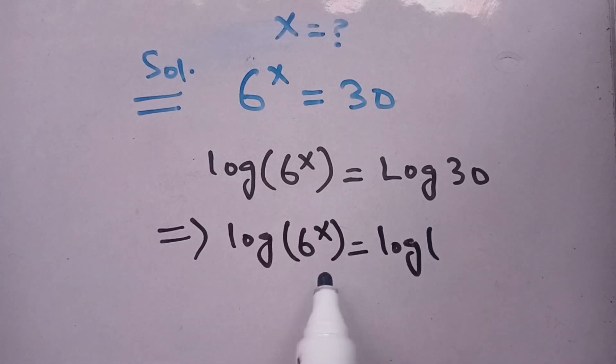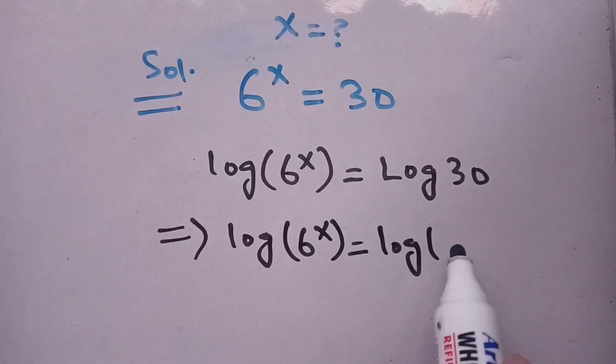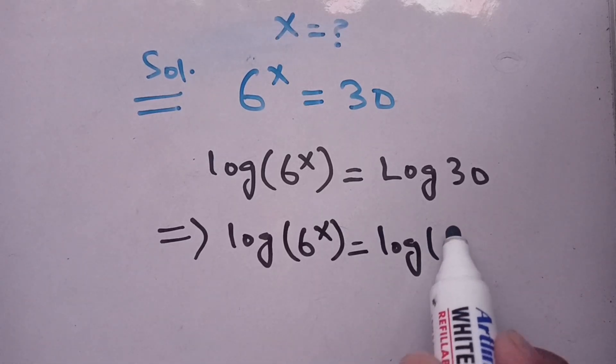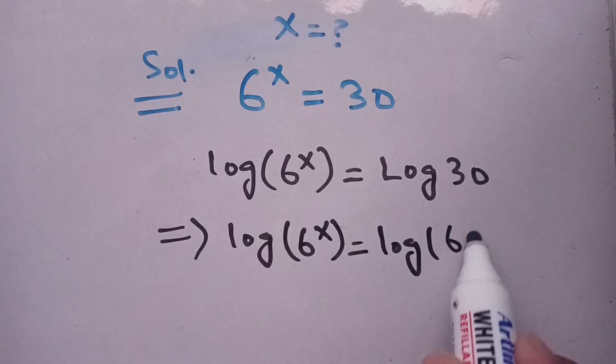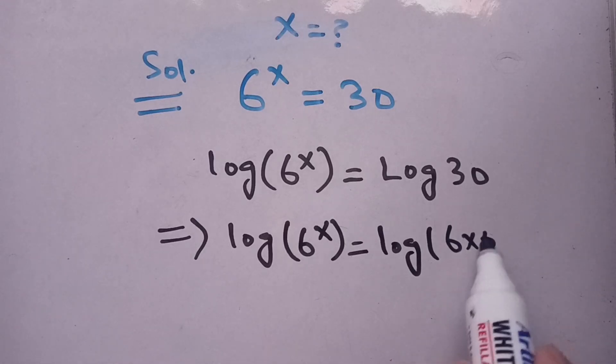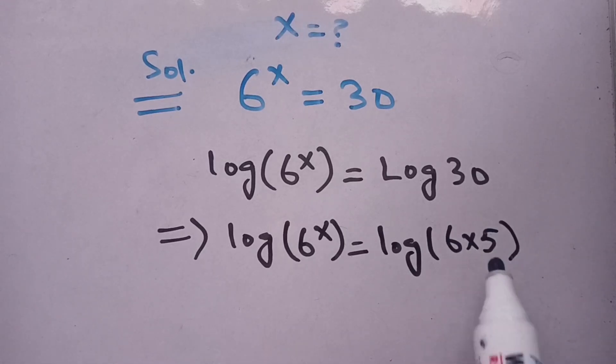Now, 30 — can we break it down in terms of 6? We can write it as 6 times 5, which becomes 30.